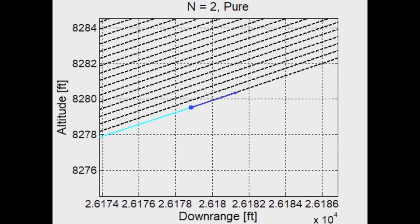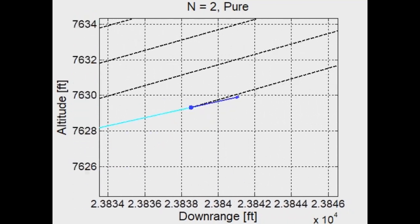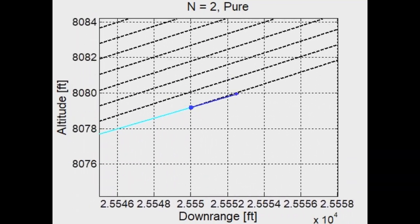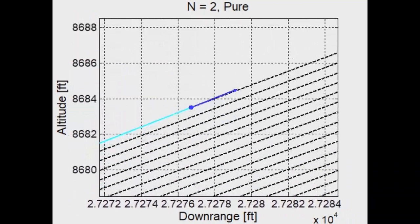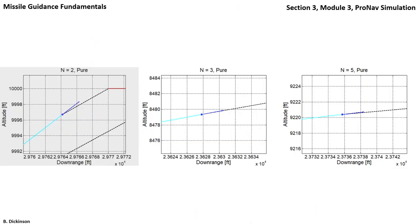And the lead angle of the velocity vector is continuously changing as well. This indicates that a collision triangle is not achieved, but the pursuer acceleration achievable in the sim is unbounded. So large accelerations are being commanded at the very end.